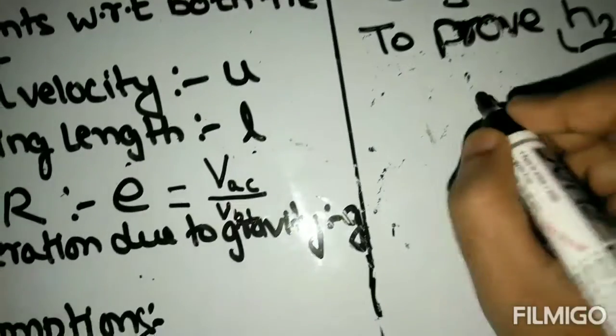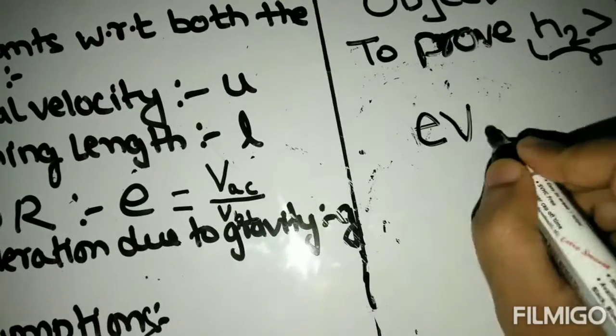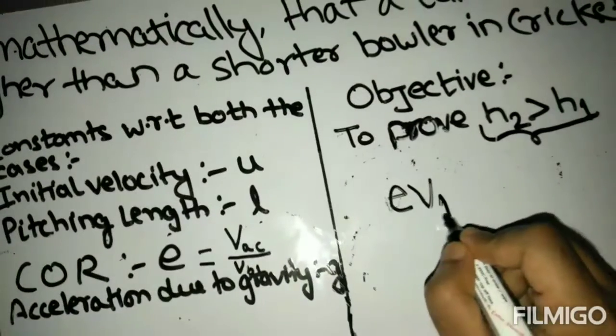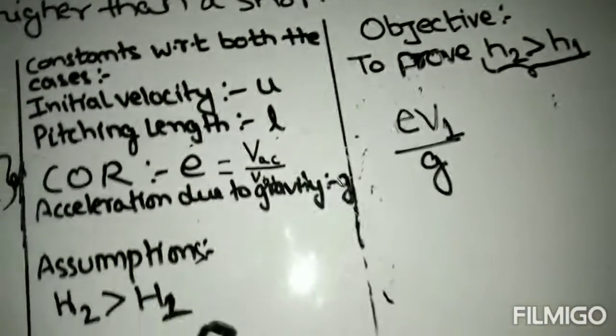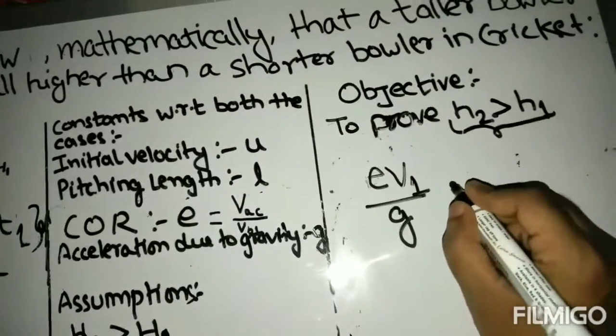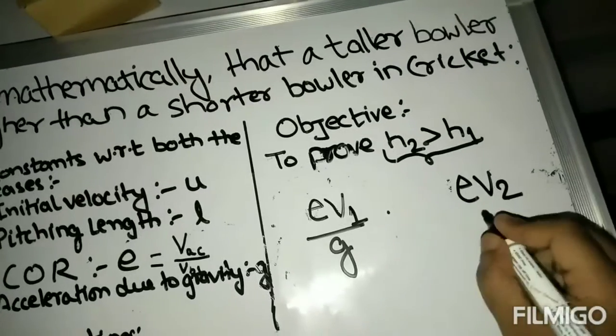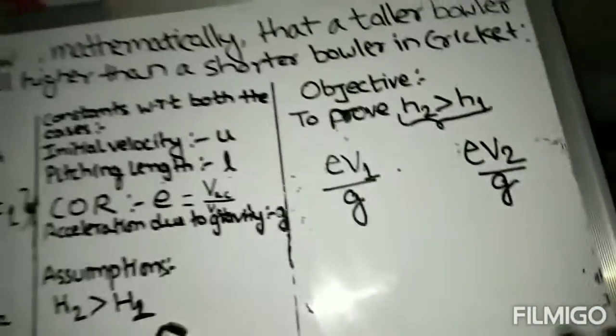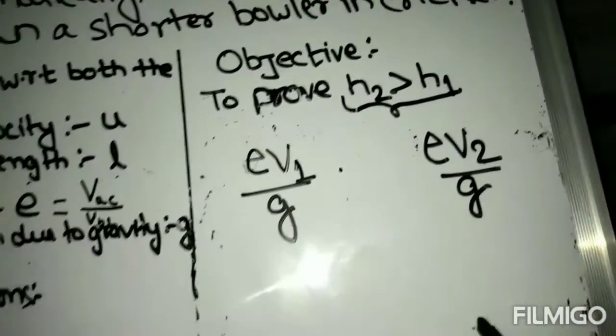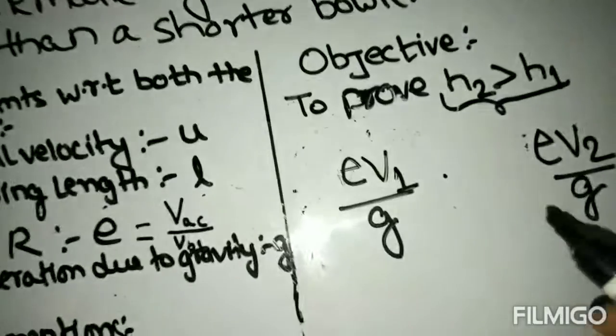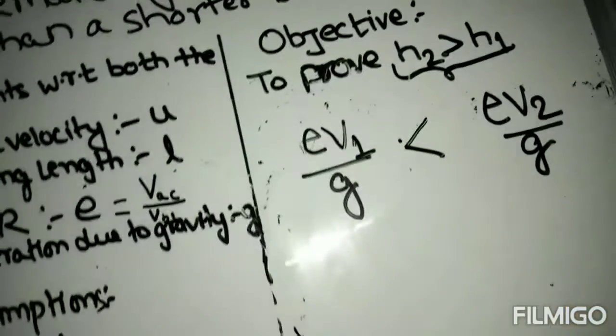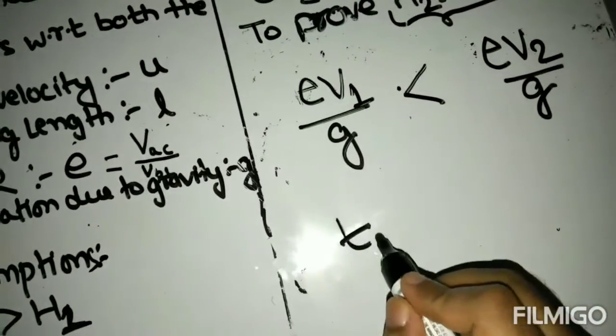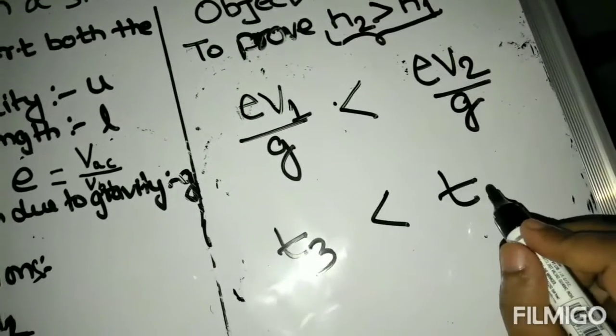We have t3 as ev1 by g and t4 as ev2 by g. Now, e and g are constant, and we already have concluded that v2 is greater than v1, that's why t3 will be smaller than t4.